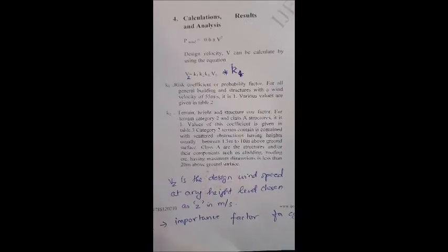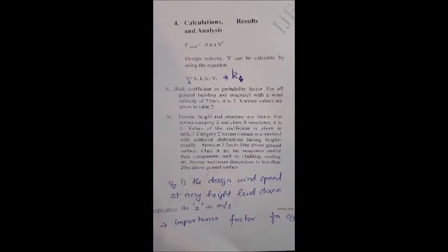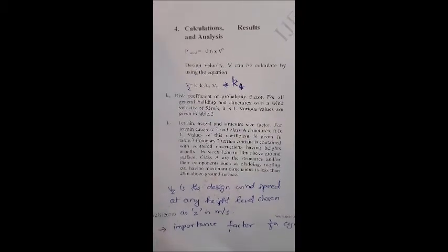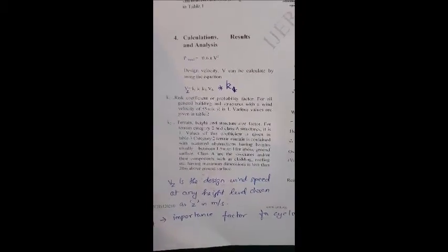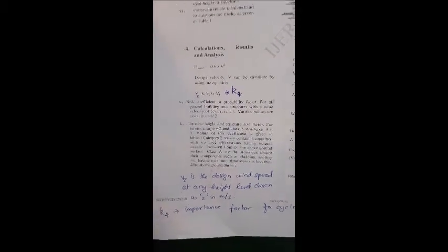As you can see, the value of k1 is the risk coefficient or probability factor for all general buildings and structures with a wind velocity of 55 meters per second. It is 1. Various values are given in table 2.